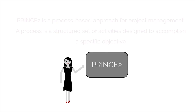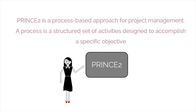PRINCE2 is a process-based approach for project management. A process is a structured set of activities designed to accomplish a specific objective. It takes one or more defined inputs and turns them into defined outputs.